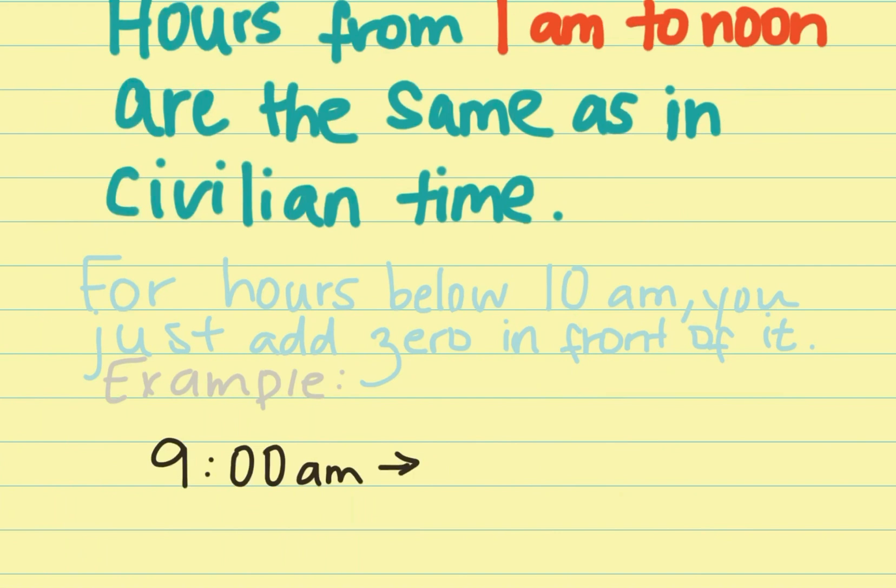So the first rule says that hours from 1 a.m. to noon, like 12 in the afternoon, are the same in civilian time. So if I say 9 a.m. in the morning, it's going to be the same in military time because from 1 a.m. to noon is the same.